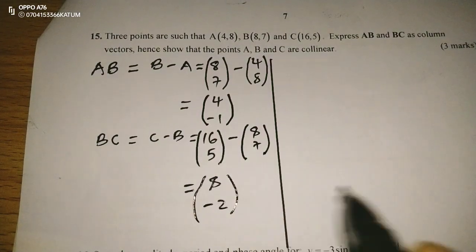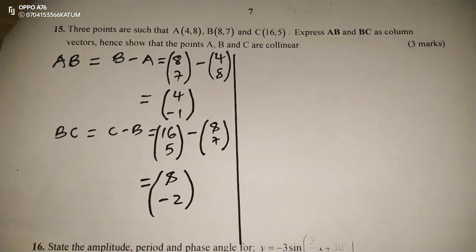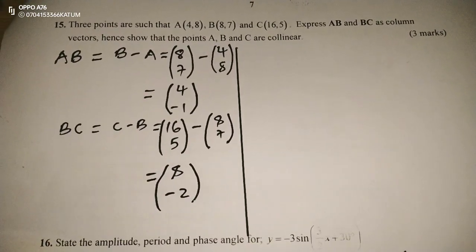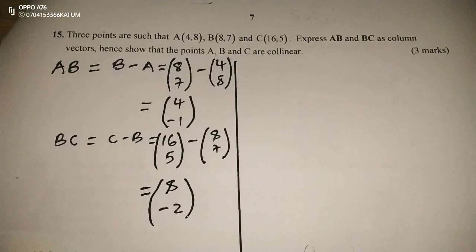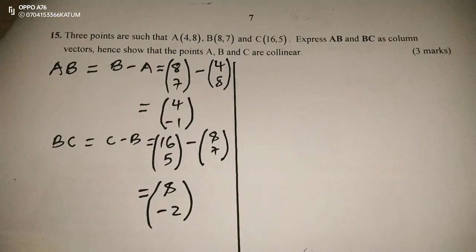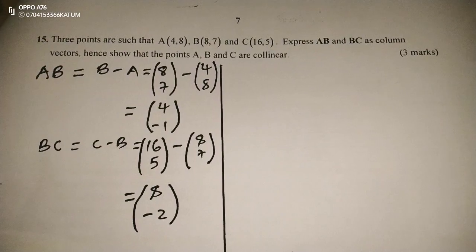Now we have expressed two vectors as column vectors. The other thing will be showing that the two vectors are parallel to one another. For two vectors to be parallel, one has to be a scalar multiple of the other.